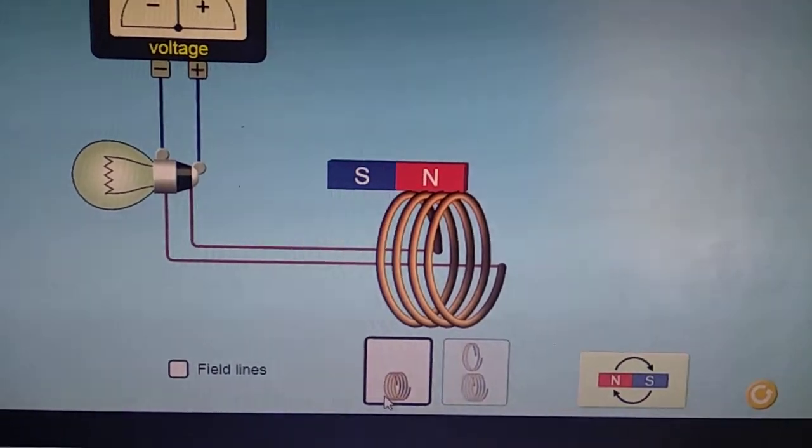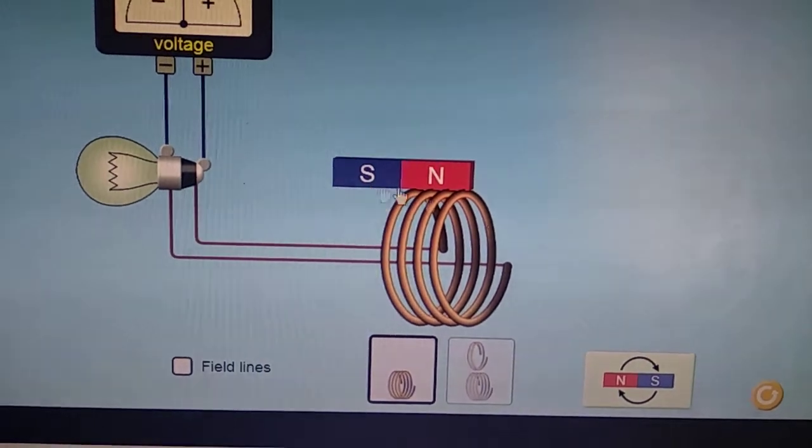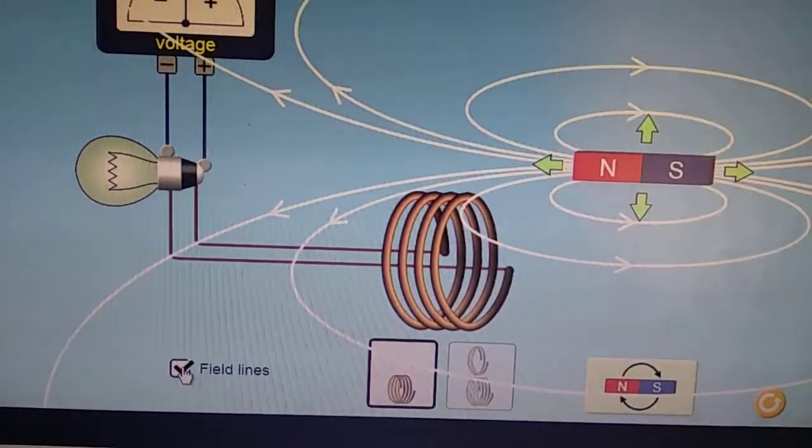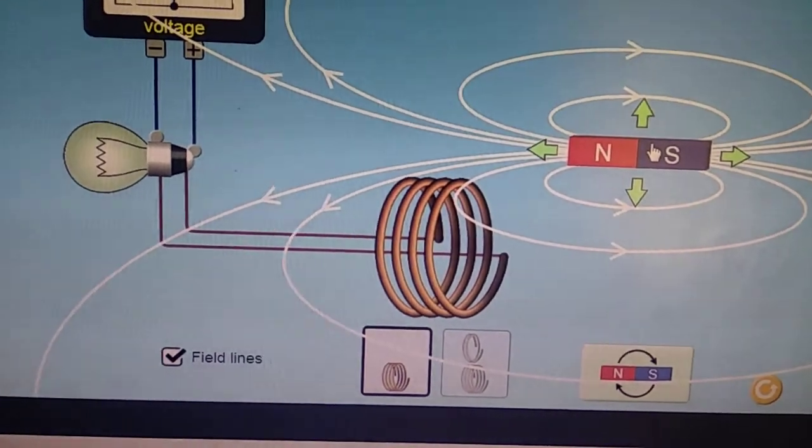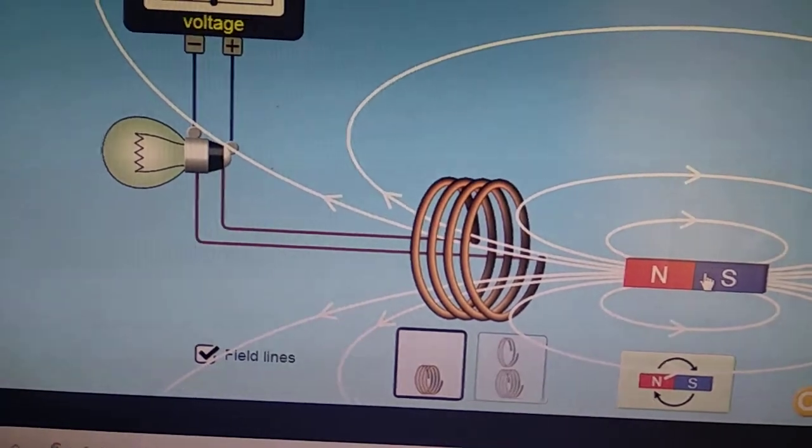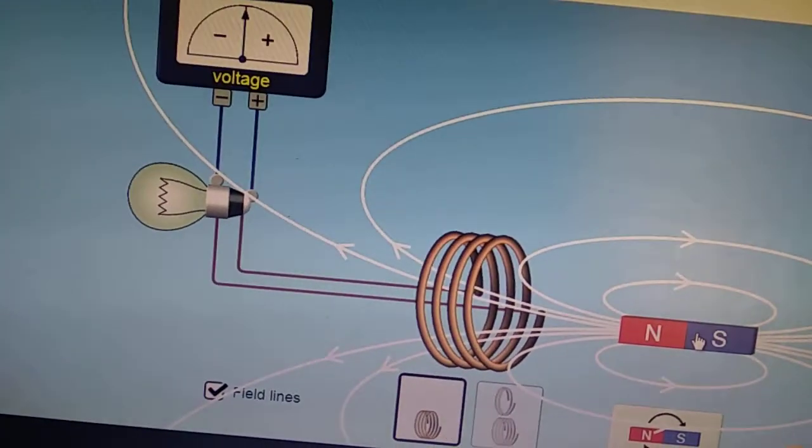Now, we can see this with the help of field lines. This is the field near the bar magnet. See, when we are moving, when we are away, the bulb is glowing, but that is a very light glow.